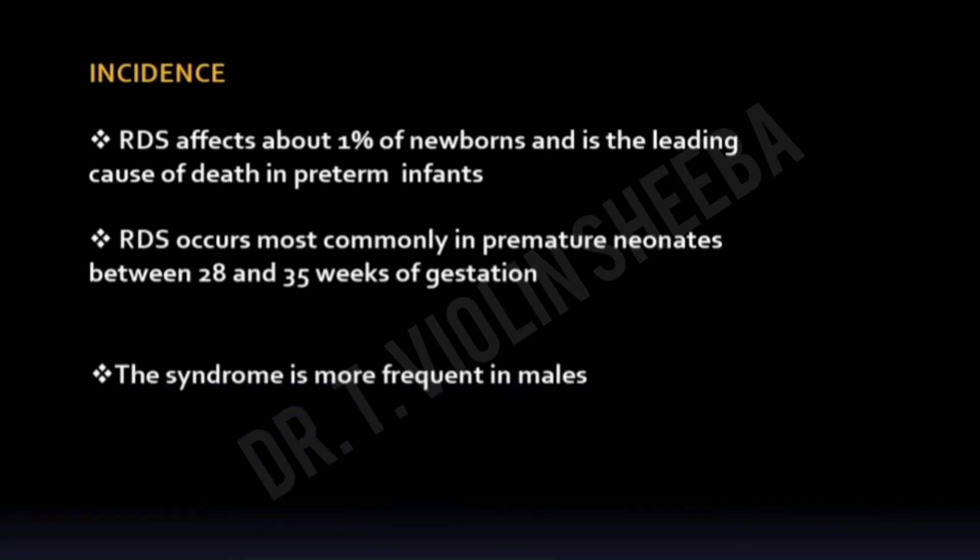Now we can see the incidence. RDS is mainly common among preterm babies, and it affects males more than females. It is one of the common causes of death during the neonatal period — around 1% of preterm babies die because of RDS. Multiple birth babies, such as twins or triplets, are more affected with Respiratory Distress Syndrome than single-birth babies.